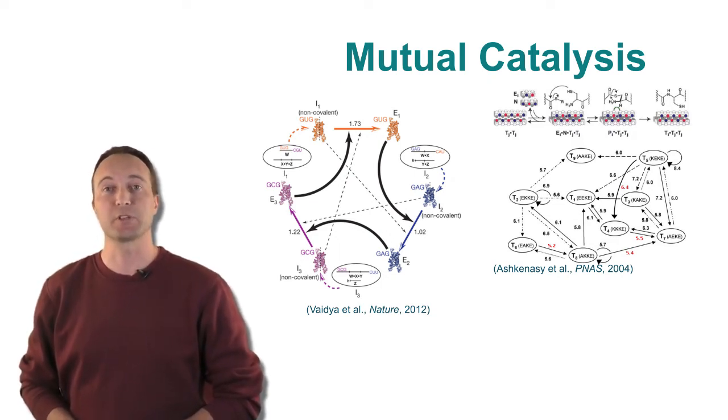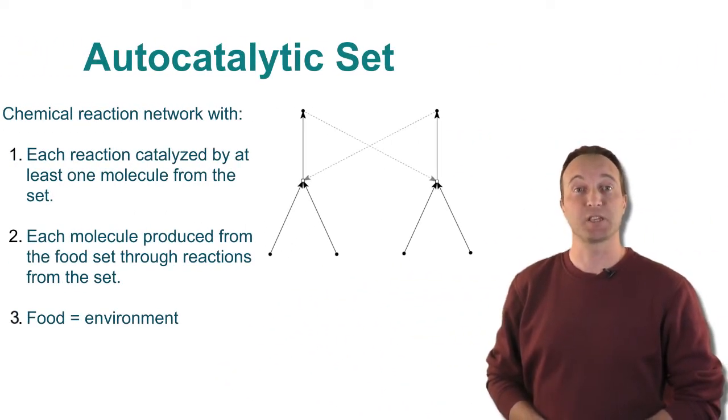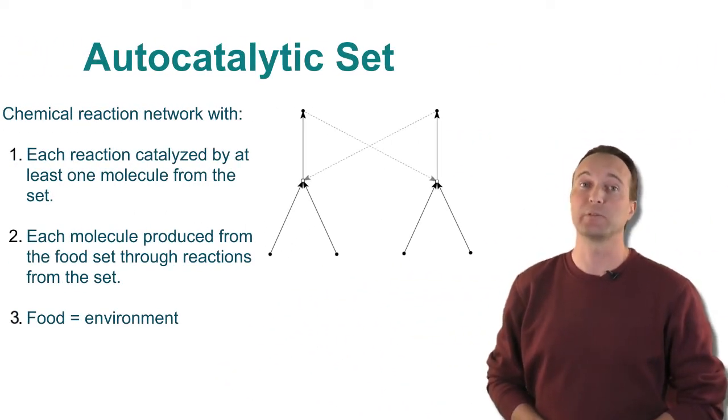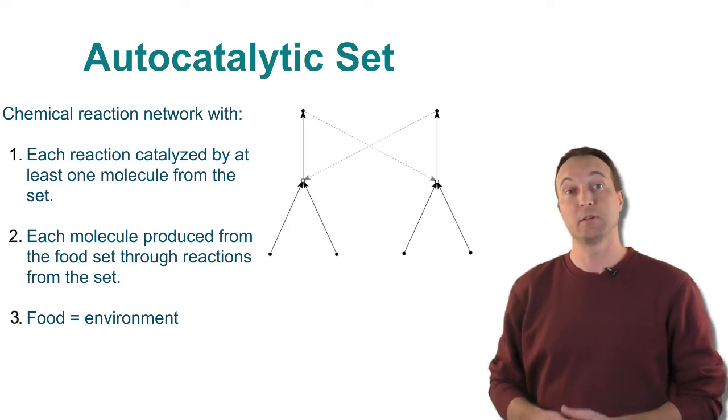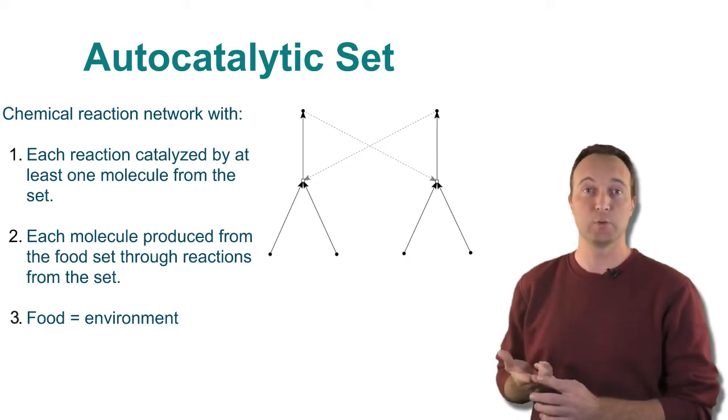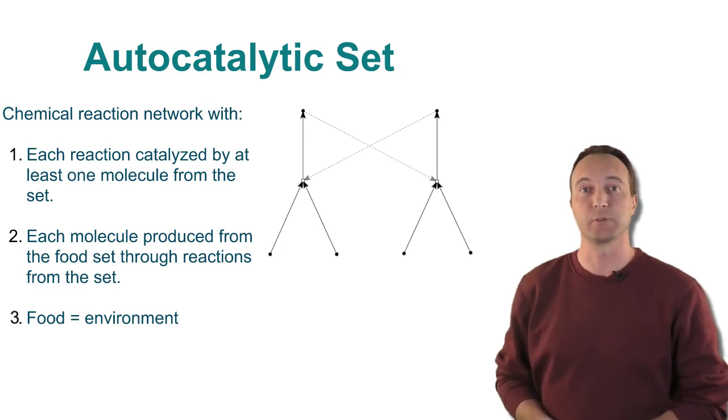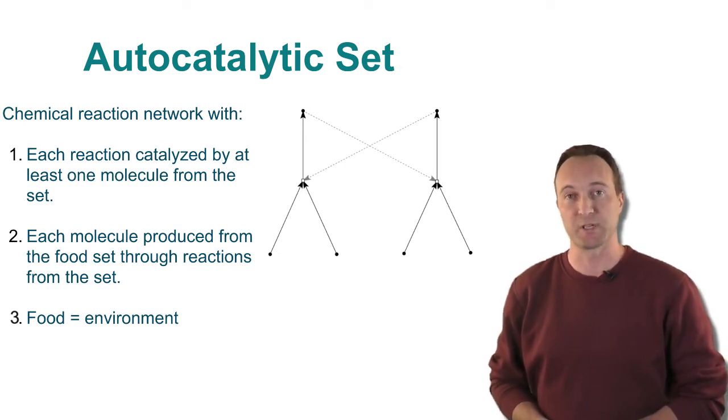What these experimental systems of mutually catalytic molecules have in common is that they are all instances of an autocatalytic set. An autocatalytic set is defined as a set of reactions and the molecules involved in them, such that, one, each reaction in the set is catalyzed by at least one of the molecules from the set itself, and two, each molecule in the set can be produced from a basic food source through a sequence of reactions from the set itself.